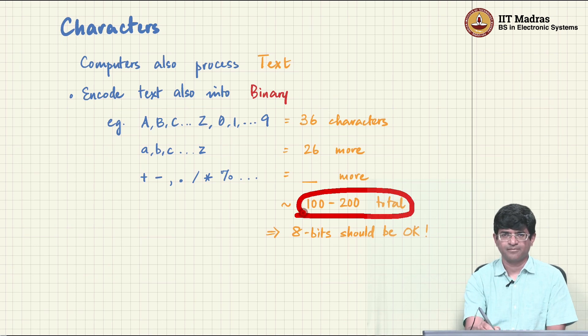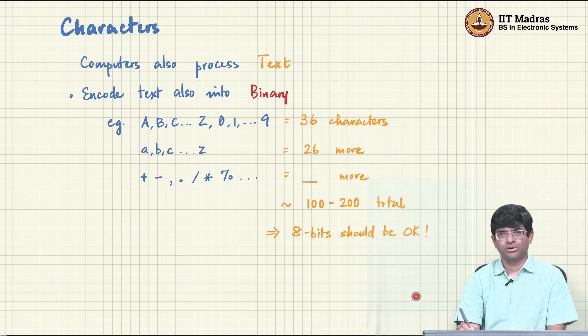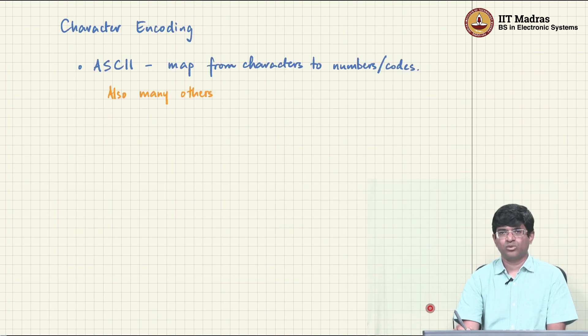But even if you add all of that together, you end up with somewhere between like 100 to 200 such characters. If you can be fairly generous and say it would still end up considerably less than 200. 2 power 8 is 256, which means that 8 bits should be pretty much OK to represent everything that we have. And that in fact was what was used for the longest time.